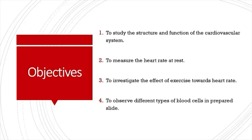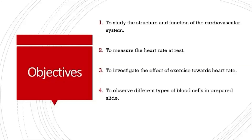The fourth objective is to observe different types of blood cells in a prepared slide. There are two different types of blood cells: white blood cells and red blood cells. The last objective is to identify the types of leukocytes in a blood smear. Leukocytes are white blood cells, which can be further divided into agranulocytes and granulocytes.